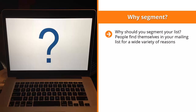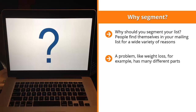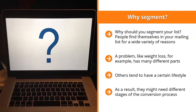Why should you segment your list? People find themselves in your mailing list for a wide variety of reasons. While they share a common interest in your niche, that's probably the only thing they have in common. A problem like weight loss, for example, has many different parts. Maybe some people are struggling with weight loss because of their metabolic rate. Other people simply eat a lot and have impulse control problems. Others tend to have a certain lifestyle. These people agree on the common problem of weight loss, but they may have different sub-problems they need addressed. As a result, they might need different stages of the conversion process.